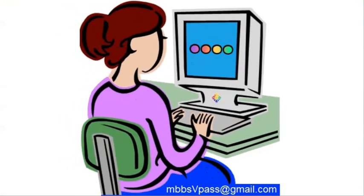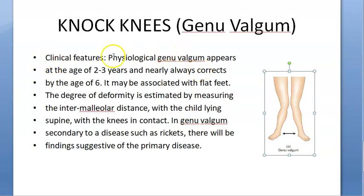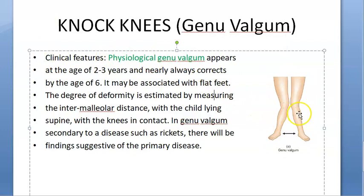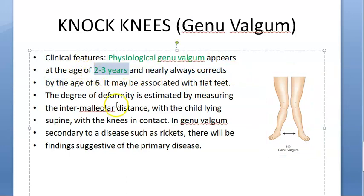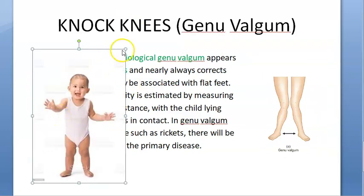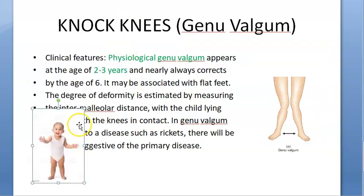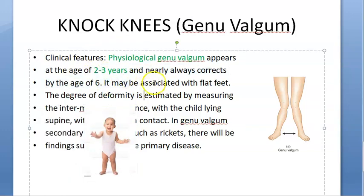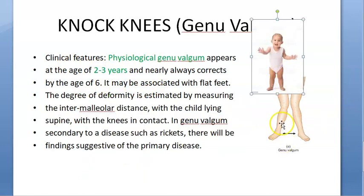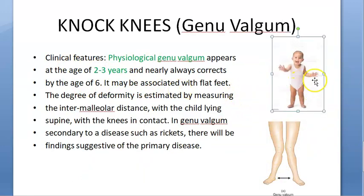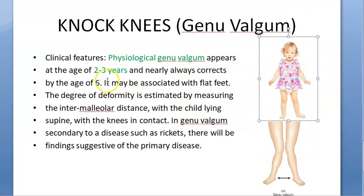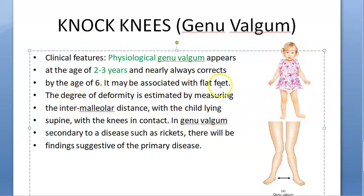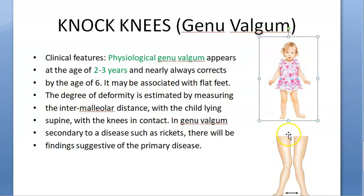Now there is one interesting phenomenon called physiologic genu valgum. Physiologic genu valgum means some amount of genu valgum is normally present in babies and it will correct itself. At the age of 2 to 3 years you will see genu valgum, and it nearly always corrects by the age of 6. It may also be associated with flat feet.